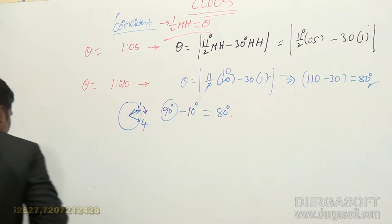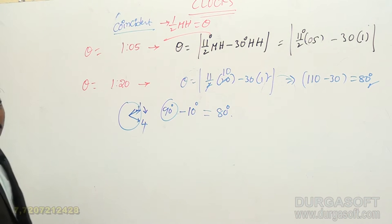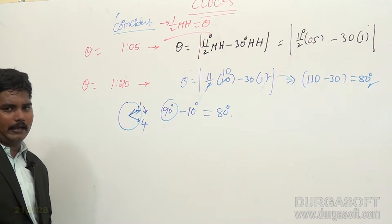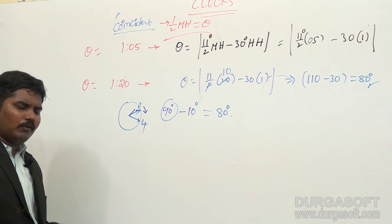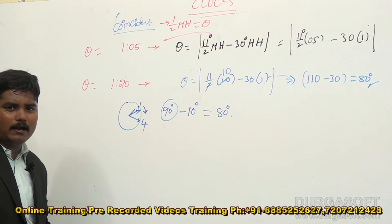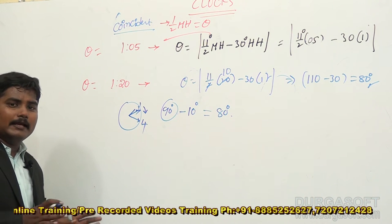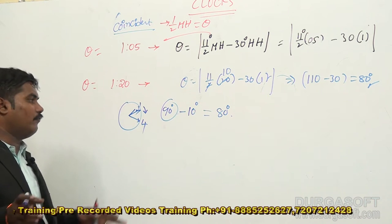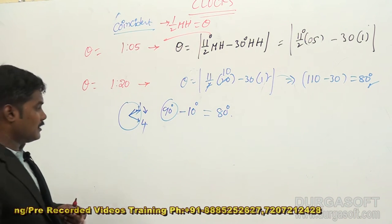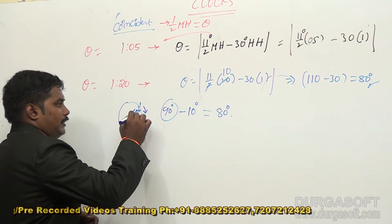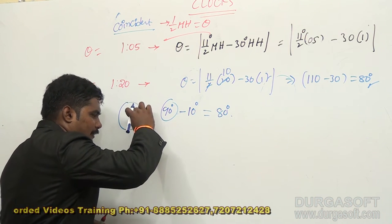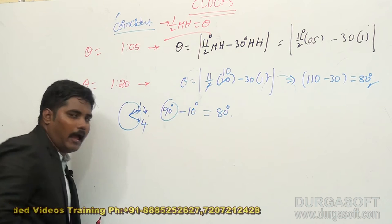You should remember the concept: in between 1 to 4, the angle is 90 degrees. After 20 minutes, the hour hand also moves. In 1 minute it can cover half a degree. In 20 minutes it covers 10 degrees. The 10 degrees is rotated towards the right side, which means it decreases the angle.